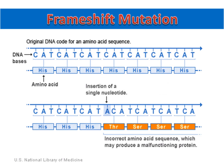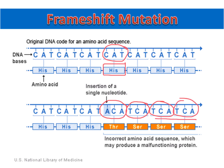Once again, we start with the same original strand of DNA. We have the codons CAT, which code for the amino acid histidine. This time, we will insert a single nucleotide, but you'll notice that this also shifts the reading frame, changing all of the subsequent codons and causing the incorrect amino acids to be placed into this protein as well.